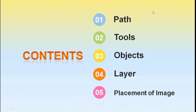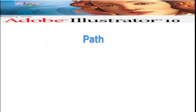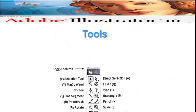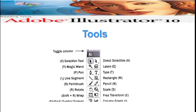Today's contents are: path tools, objects, layer, and placement of image in Illustrator. What is path? The object can be formed with more than one segment; a single segment can also be used if necessary. The border of the object is called path. A straight line is also called a path.